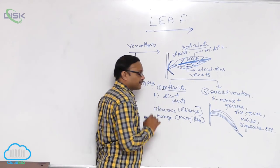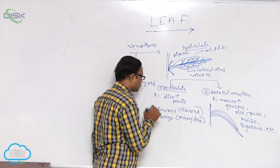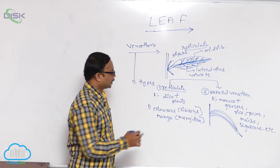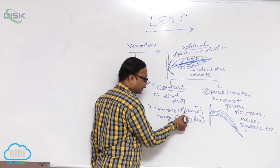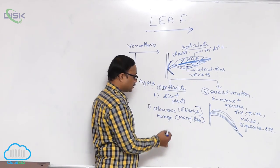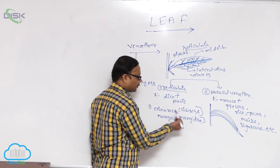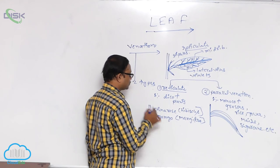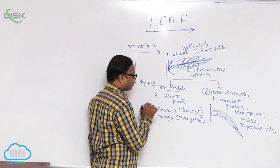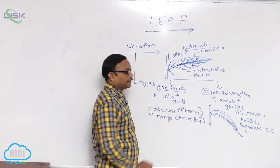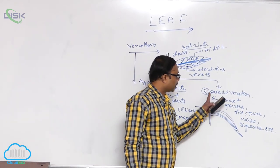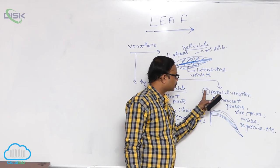Examples of reticulate venation: dicot plants such as china rose — scientific name Hibiscus — and mango, scientific name Mangifera. These dicot plants show reticulate venation.